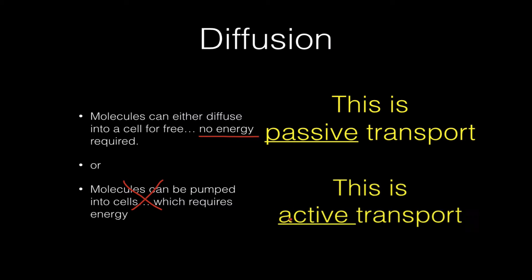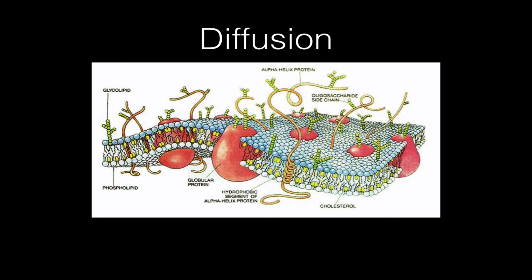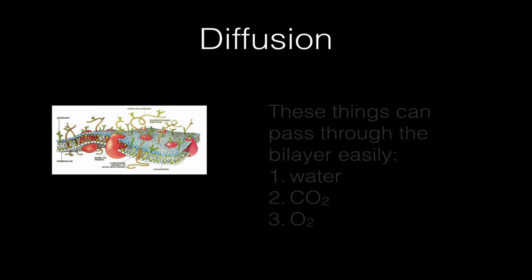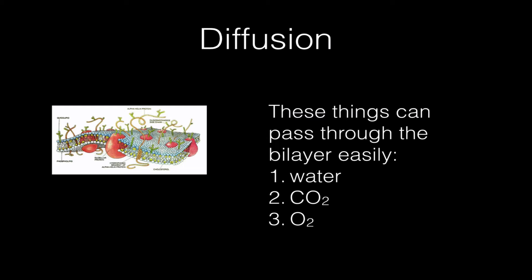Passive means no energy. Active transport means it does require energy, and we're going to cover that later in a future video cast. We're just going to look at diffusion in this video cast. Diffusion is the ability of certain solutes — molecules that will dissolve in water — to pass through the membrane. Water, carbon dioxide, and oxygen can all diffuse very easily through the cell membrane.